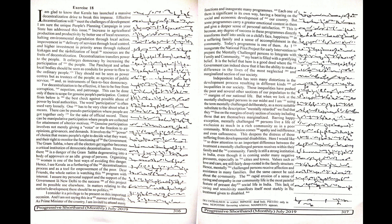Barring happy exceptions, mentally challenged persons live a life of exclusion as much in a rich community as in a poor community. With exclusion comes apathy and indifference and even callousness. This deepens the distress of those suffering from developmental disabilities. I would like to draw attention to an important difference between the treatment a mentally challenged person receives within their family and the community. Family is still a strong institution in India even though it is coming under many negative pressures especially in cities and towns. Values such as love and care are still fairly deep rooted in the family structure.